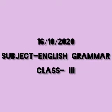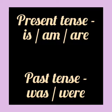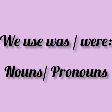Hello everyone. Today we are going to learn about was and were. We use was and were in past tense. Students, in present tense we use is, am, are. But in past tense we use was and were. We use was and were with nouns and pronouns.